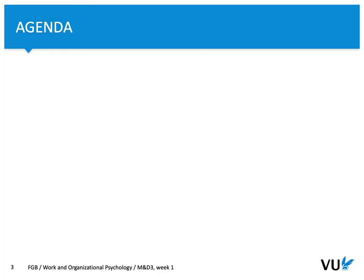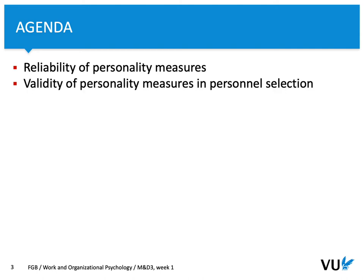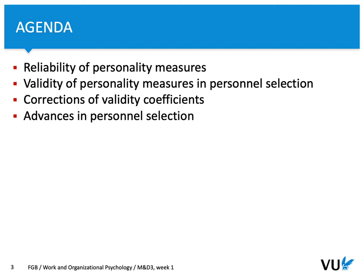So what are you going to see in the second part? I'm going to focus on reliability of personality measures, then I'm going to discuss validity of personality measures in personnel selection — that would be another video clip — and then I will focus on corrections of validity coefficients along with some advanced topics in personnel selection. Those three major elements — reliability, validity, correction and advanced topics — form three different video clips that will be distributed via Canvas.